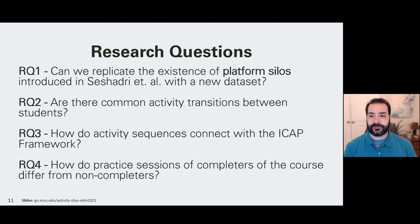So that leads us to our research questions. RQ1 asks, can we replicate the platform silos using a new data set? RQ2 says, given those activity types that we talked about, are there common transitions between students? RQ3 then says, of those transitions, is there any connection to the ICAP framework? And finally, when we look at completers versus non-completers, are there differences behind their behaviors?